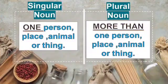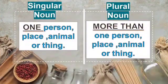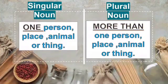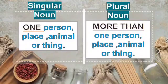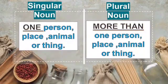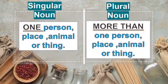A singular noun is a person, place, animal or thing which is one. But plural nouns are persons, places, animals or things which are more than one, or you can say many.